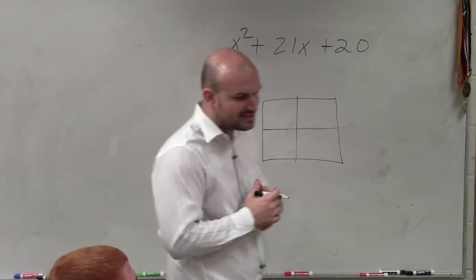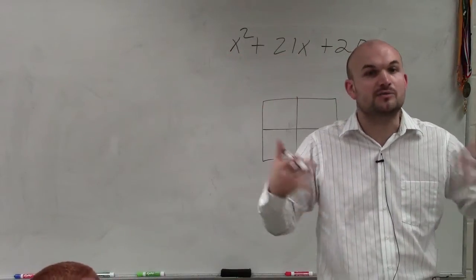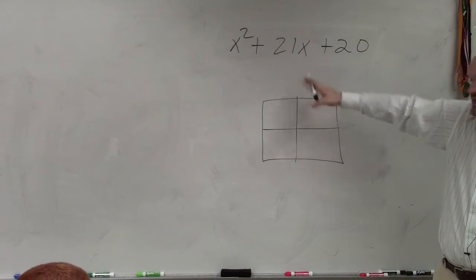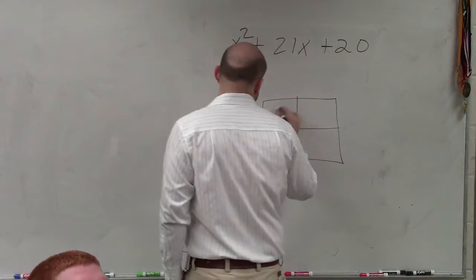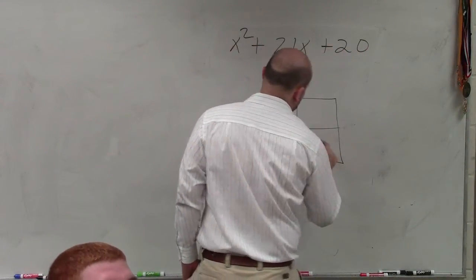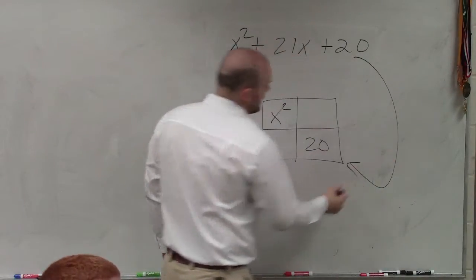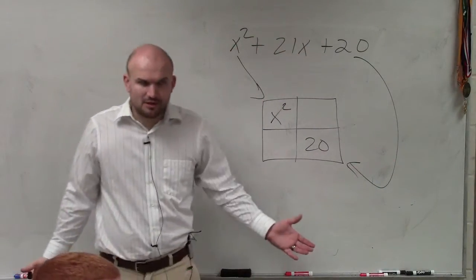So one thing that I'm going to show you guys how to do is, how can we look at the factor? And how can we use the factoring technique, this area, to determine what the factors are for this? So what I'm going to do is, I'm going to take x squared, and I'm going to take 20. And I'm going to fill in these two boxes. That goes there. And that one goes in there. It's still a box, right?